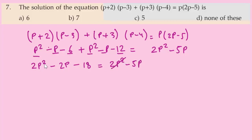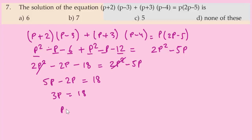The 2P² terms cancel. Moving -5P to the left: -2P + 5P gives 3P, and moving -18 to the right gives +18. So 3P equals 18, meaning P equals 6. That is Option A — the correct answer.